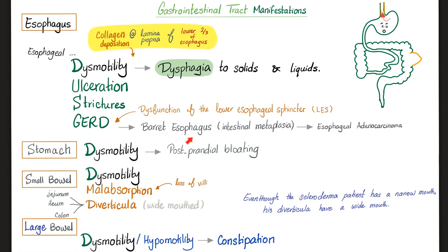The stomach can suffer dysmotility causing post-prandial bloating — prandial comes from the Latin prandium, meaning lunch. The small bowel shows dysmotility, malabsorption due to loss of villi, and wide-mouth diverticula, which can be in the jejunum, ileum, or colon. The colon shows dysmotility causing constipation. In summary: esophageal, stomach, small bowel, and large bowel dysmotility — nobody's moving.